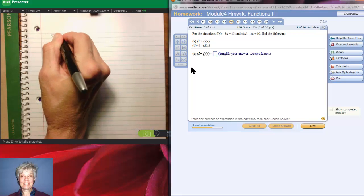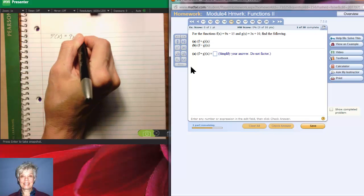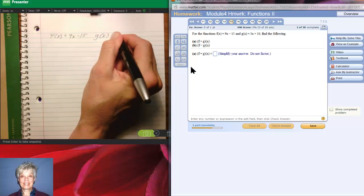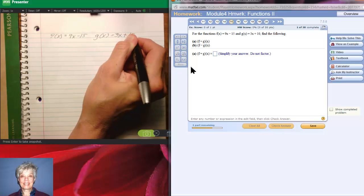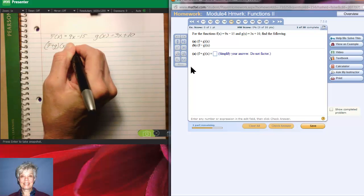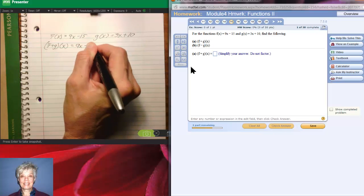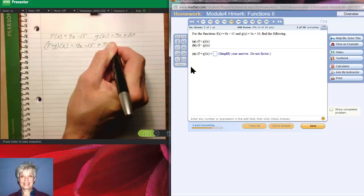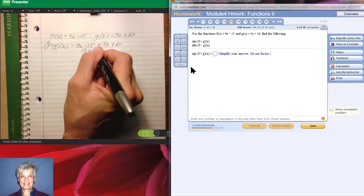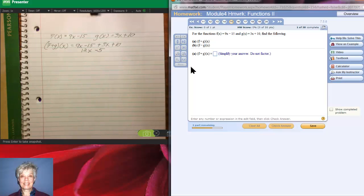If f(x) equals 9x minus 15 and g(x) equals 3x plus 10 and we add the two functions f plus g of x, then all I'm going to do is say 9x minus 15 plus 3x plus 10. I'm going to add my like terms, 12x minus 5. Let's see if that's right. Yay for me.